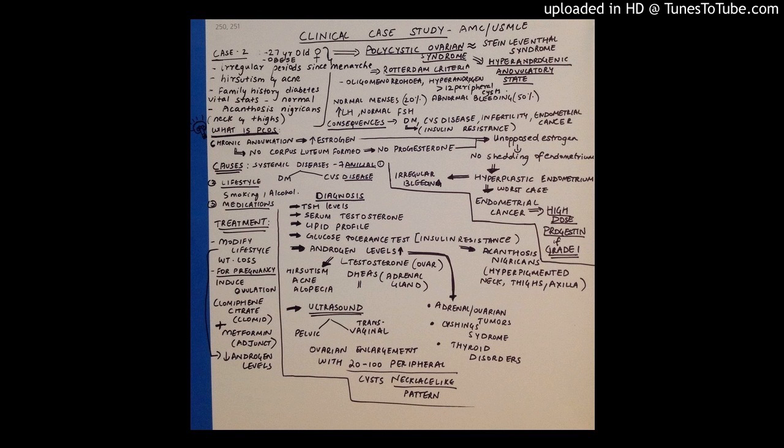So this is a brief understanding on polycystic ovarian syndrome. The main things that you need to know are the consequences, the complications, the causes, the treatment, and the diagnostic tests. If you guys have any doubts on any of these or any questions, you can post in your comments below. Thank you.